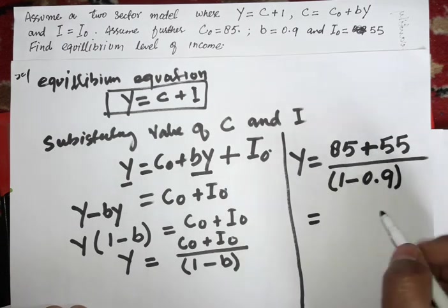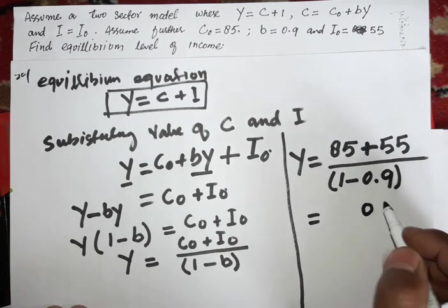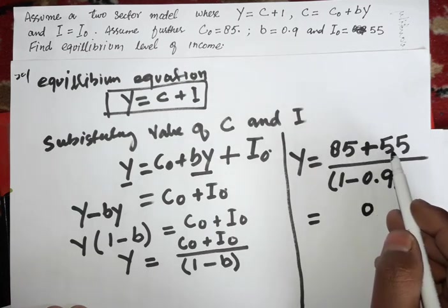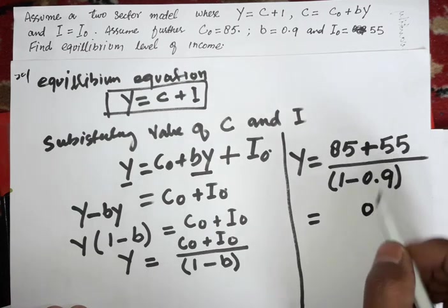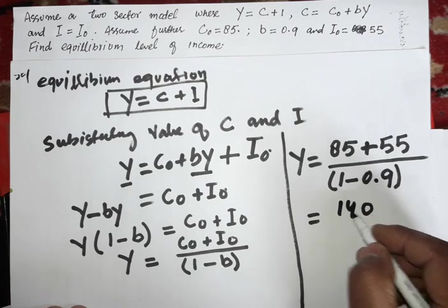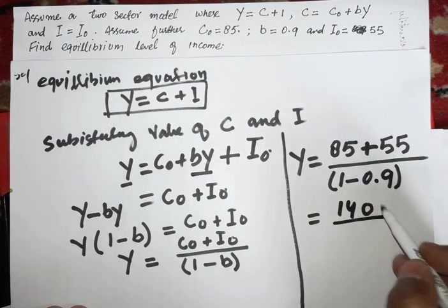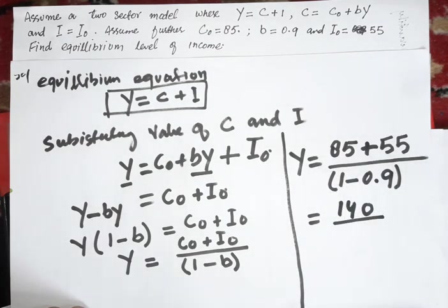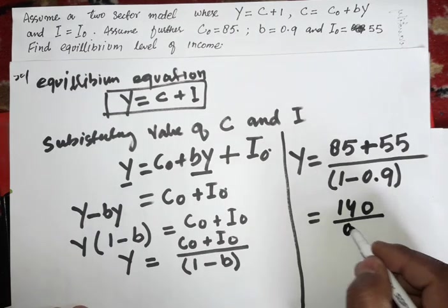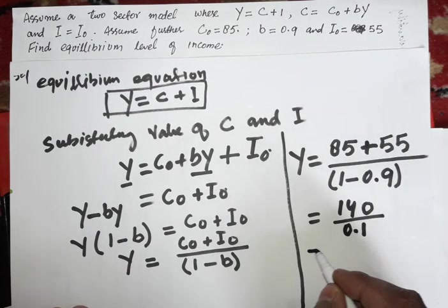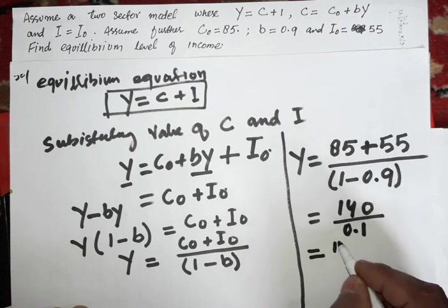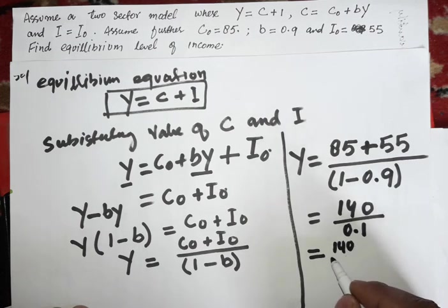So that will be 85 plus 55 equals 140 divided by 1 minus 0.9, that is 0.1.